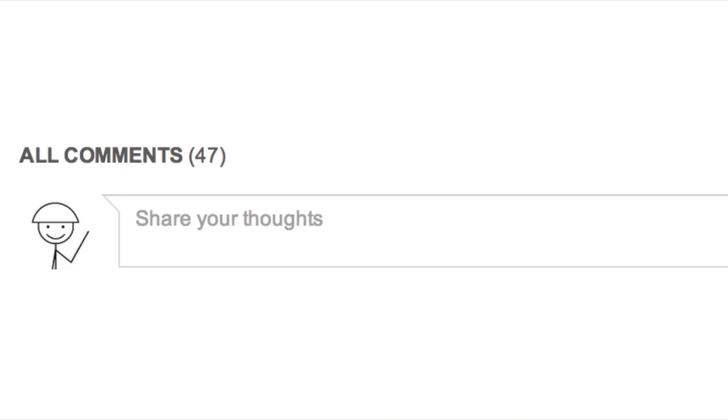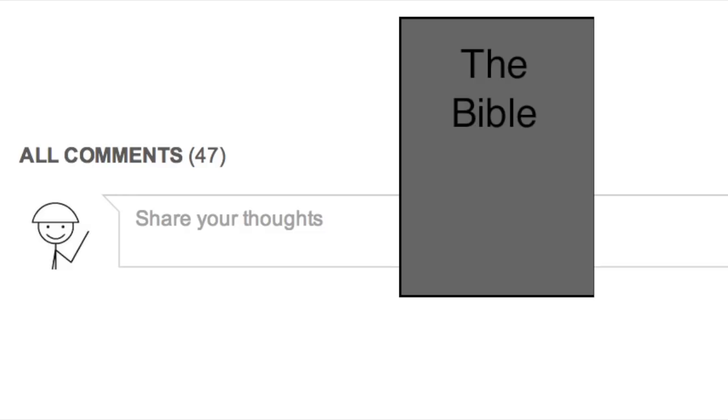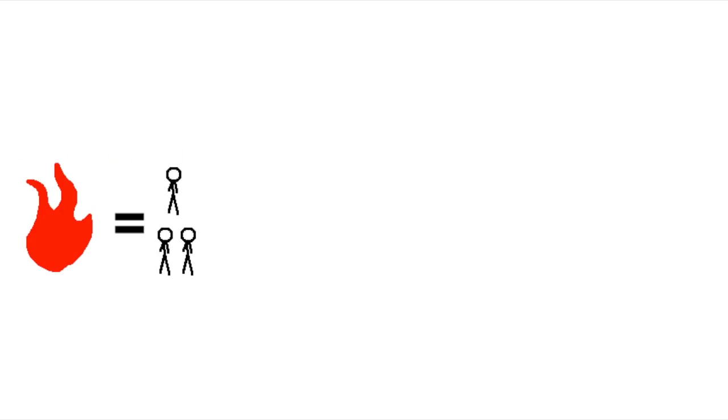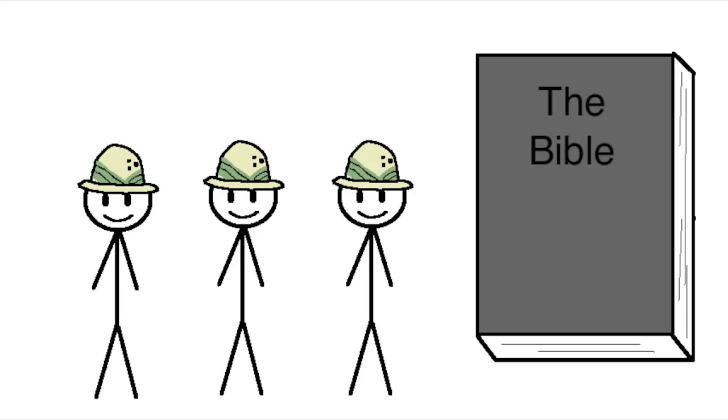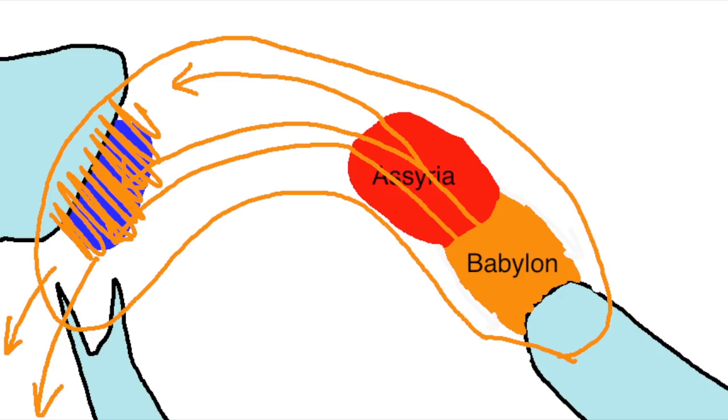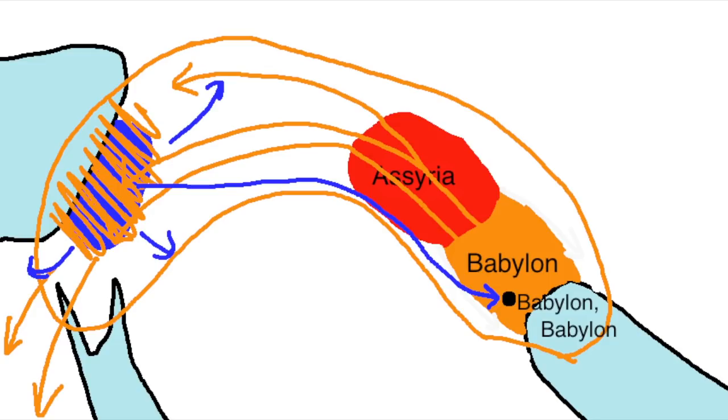I'll just let you guys hash out in the comments, to what extent, if any, the Bible can be considered a reliable historical source. After all, flame wars means more audience participation means YouTube's algorithm likes me more means more views for me. Unfortunately for me, the Bible and the archaeological record are mostly in agreement following the Babylonian exile. After the Babylonians destroyed the temple in Jerusalem, many of the inhabitants of Judah were deported and fled to various parts of the Babylonian empire, particularly the city of Babylon itself.